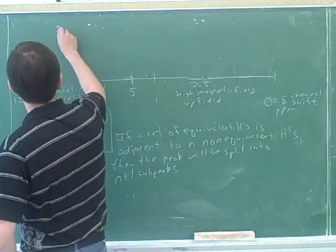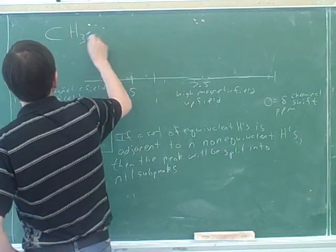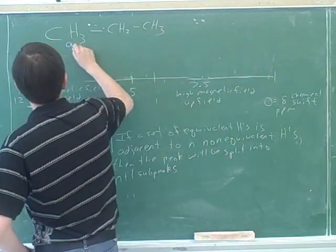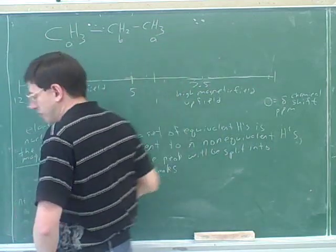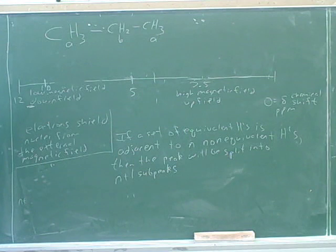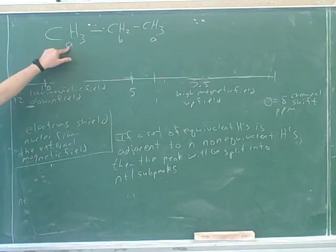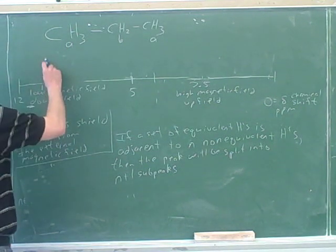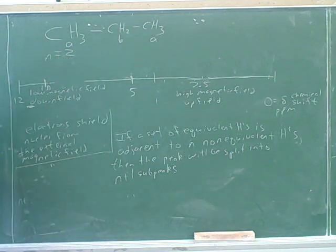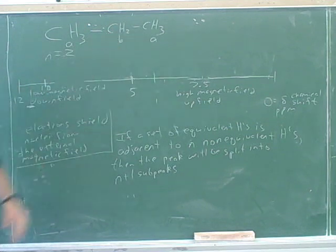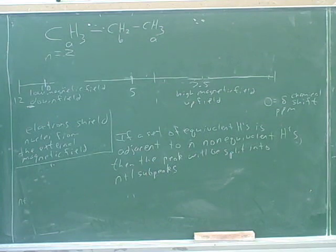Let's take a look at some examples. We already saw that there would be two peaks. Let's focus on peak A. How many adjacent non-equivalent hydrogens are there? That would be n. Well, here n is 2 because these hydrogens here are adjacent to these two hydrogens. So n would be 2 for group A.